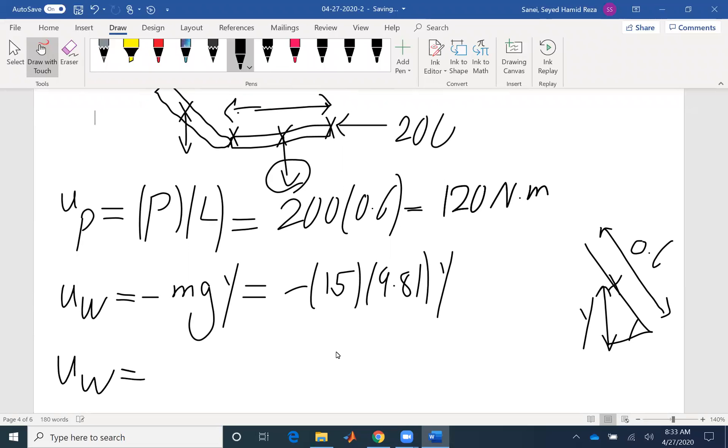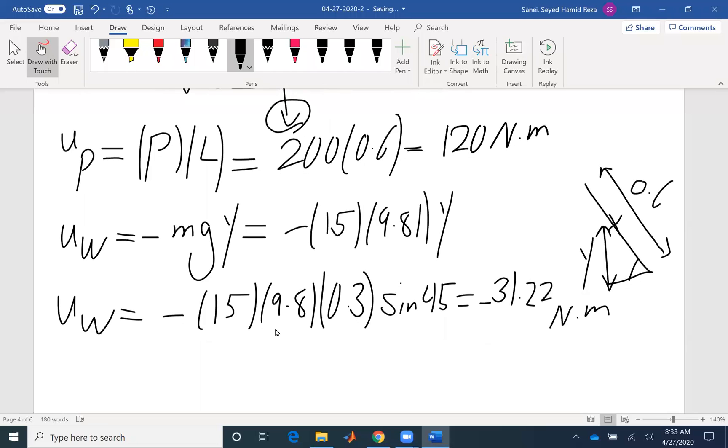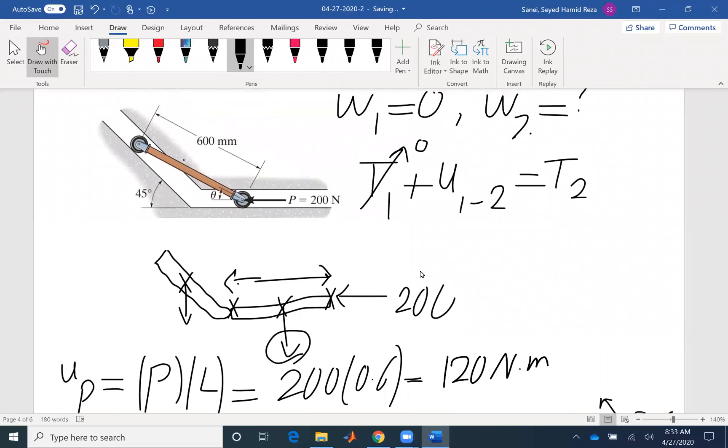So if I write it again here that would be negative 15 times 9.81 times 0.3 sine 45, which will give me negative 31.22 Newton meter. So I found the work that is done on the sample.